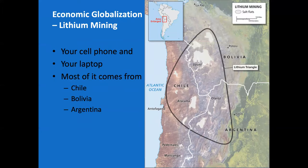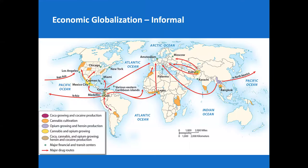Here's an example of globalization: lithium mining, which takes place in the Atacama region of South America — that would be Bolivia, Chile, Argentina. Why is that important? This is in your laptops and your cell phones. If you're Apple or Samsung or any laptop maker, this is significant because this is where your resources are coming from. Another example is the illicit drug trade — informal globalization — where there is a demand, a supply will rise up to meet it. This gives you a sense of the movements of illegal drugs across the Earth.